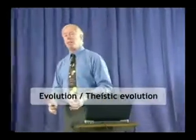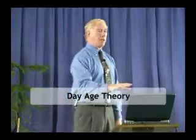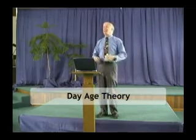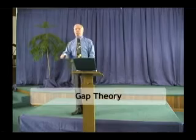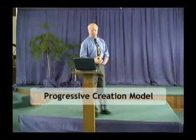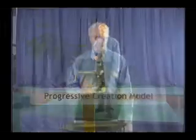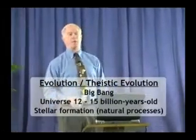The first model is evolution, and I'm going to lump into there something called theistic evolution. Theistic evolution has several different forms: the day-age theory, which holds that God used the Big Bang to start everything off and the days of creation are long indefinite periods of time; the gap theory, which puts billions of years of geologic time between Genesis 1:1 and Genesis 1:2; and the progressive creationist model, which teaches that God used the Big Bang and the days of creation were long indefinite overlapping periods of time. All those models — evolution and theistic evolution — believe in the Big Bang, a universe 12 to 15 billion years old, and stars formed by natural processes.